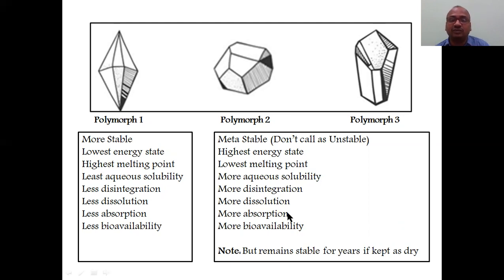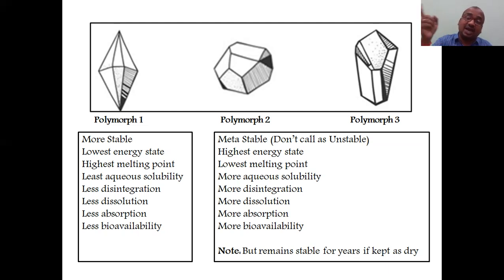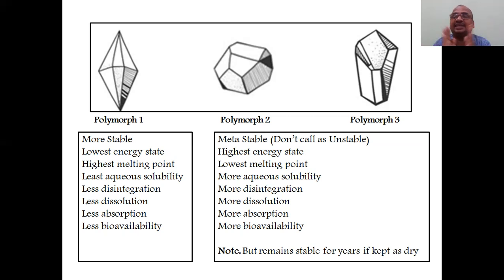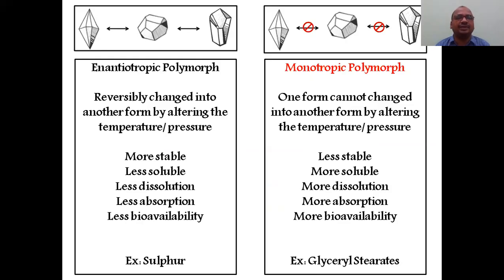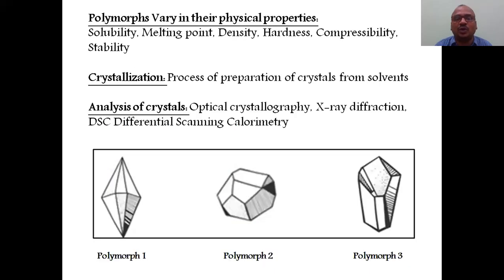Why is it called metastable rather than unstable? Because it remains stable for years if kept dry. However, if any moisture is present, it will immediately become soluble. That is why you must always maintain it in the dry crystalline form.